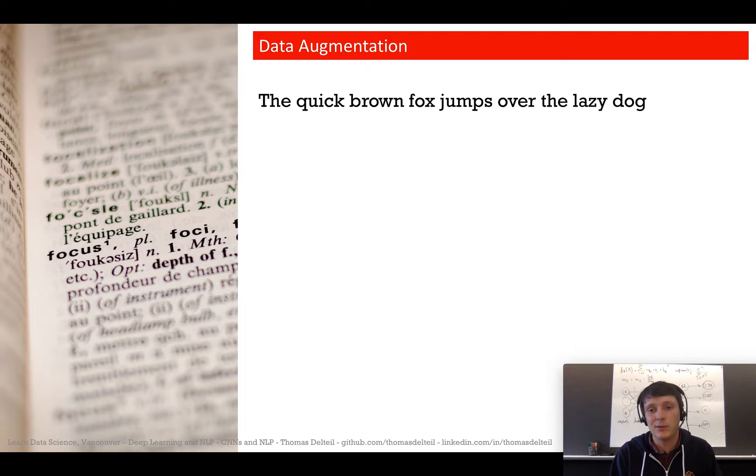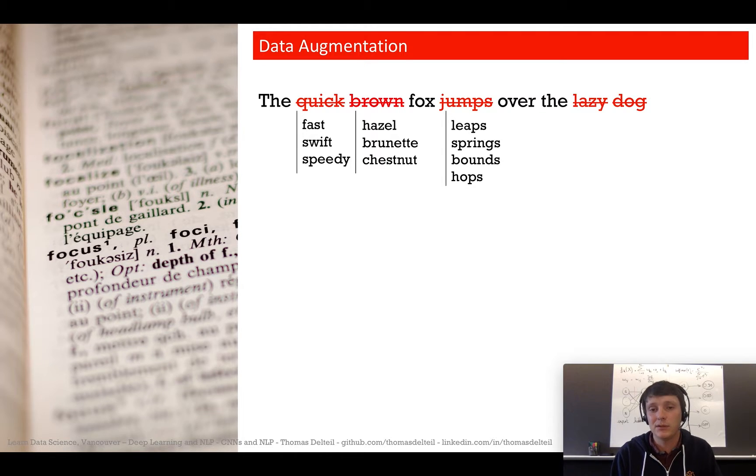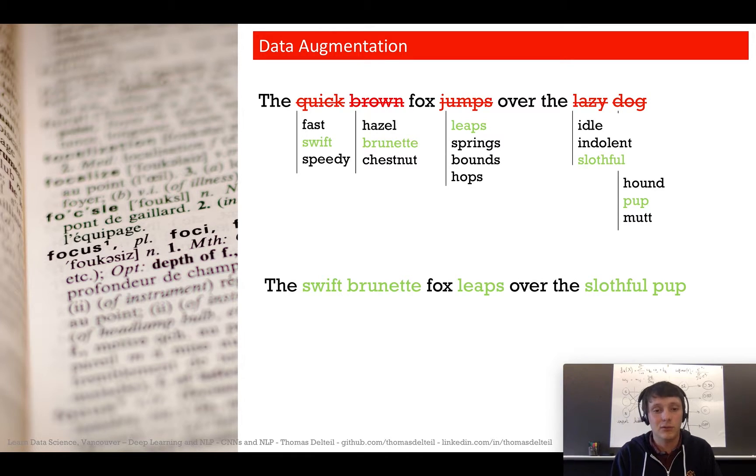We can augment it to get a new example that means the same thing. You randomly select some words and get synonyms. For 'brown' you have hazel, brunette, chestnut; for 'jumps' you have leaps, springs, bounds, hops. Then you randomly select one and end up with a new sentence like 'the swift brunette fox leaps over the slothful pup.'